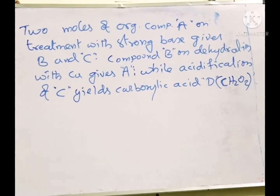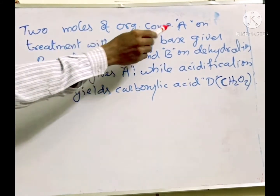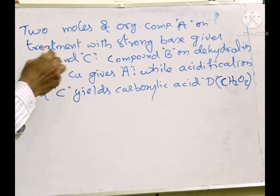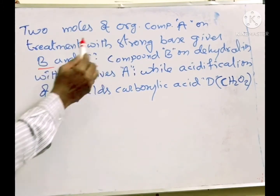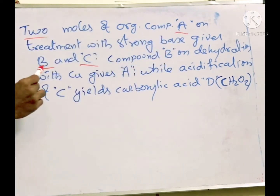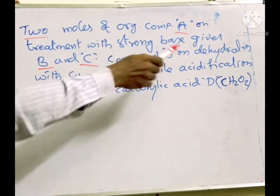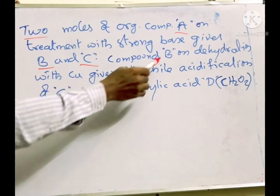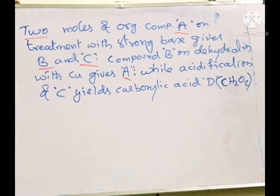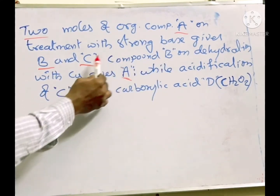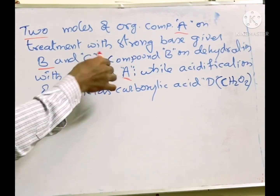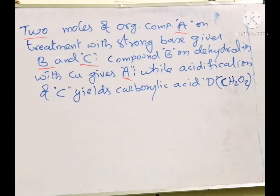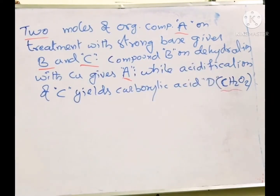Now the second question. Two moles of organic compound A, on treatment with strong base like NaOH or KOH, gives B and C. Compound B on dehydration with copper gives A. While acidification of compound C yields a carboxylic acid D. The molecular formula of that carboxylic acid D was given as CH2O2. Using this, they asked to identify all compounds A, B, C, D.